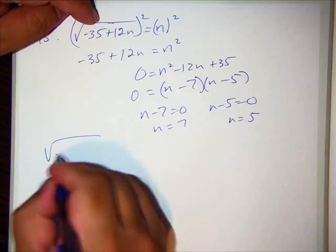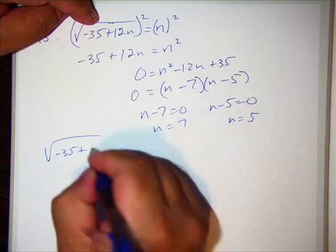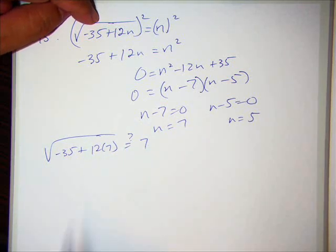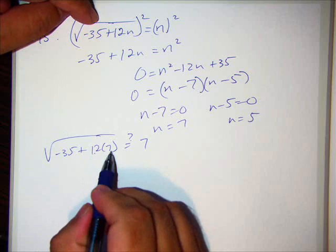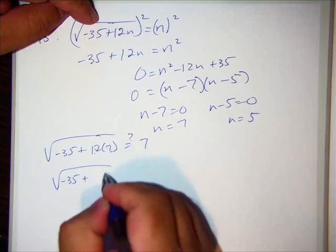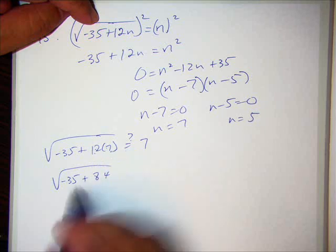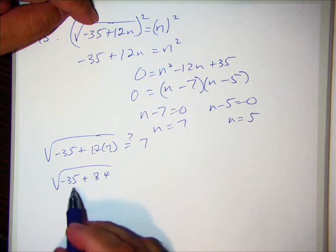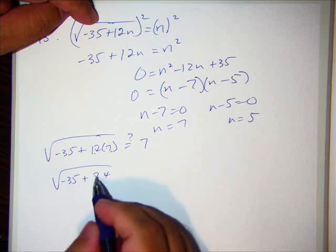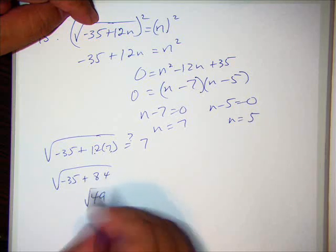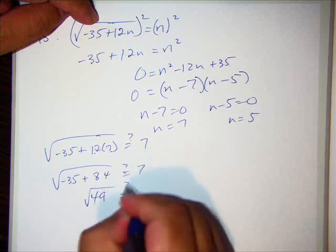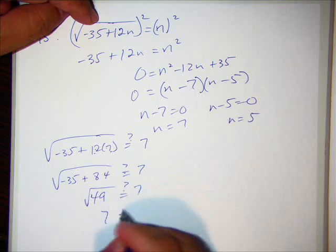√(-35 + 12 times 7), is that equal to 7? So what's that? 84? Is that right? 7 times 12 is 84. 84 - 35. That's going to be 49. 84 - 35. 7 minus 3 is 4. Square root. Woohoo. Yep.